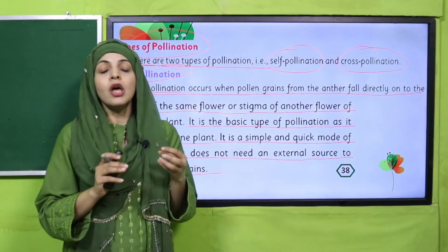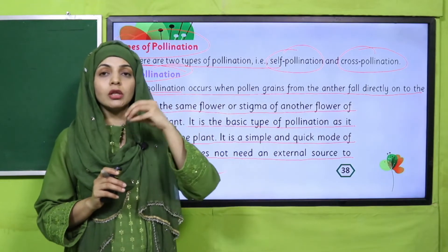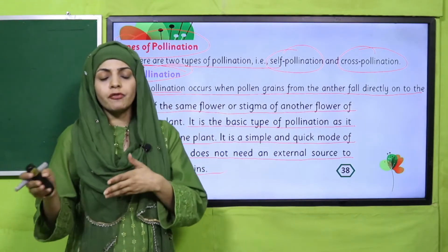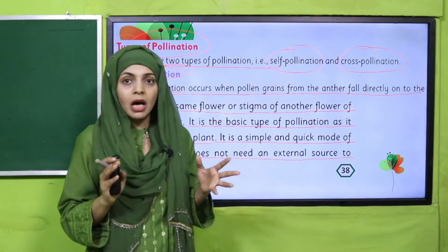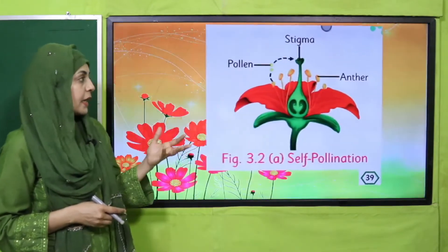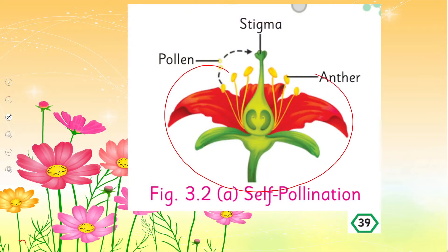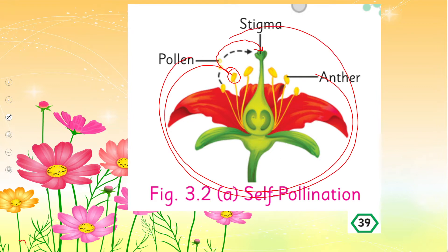Self-pollination is when the pollen from the same flower falls on the stigma of the same flower, or the stigma of another flower of the same plant. The pollen from the anther is transferred onto the stigma within the same flower or same plant. There is no external source involved in transferring the pollen to the stigma or female part. This is the simplest and quickest mode of pollination and is called self-pollination because it occurs within the same plant.